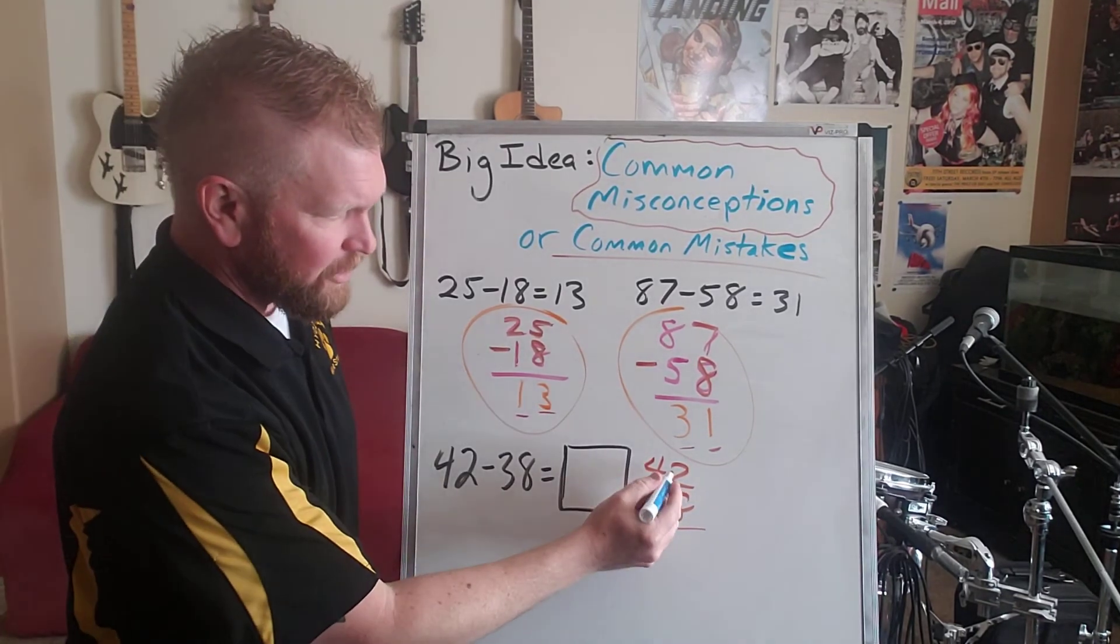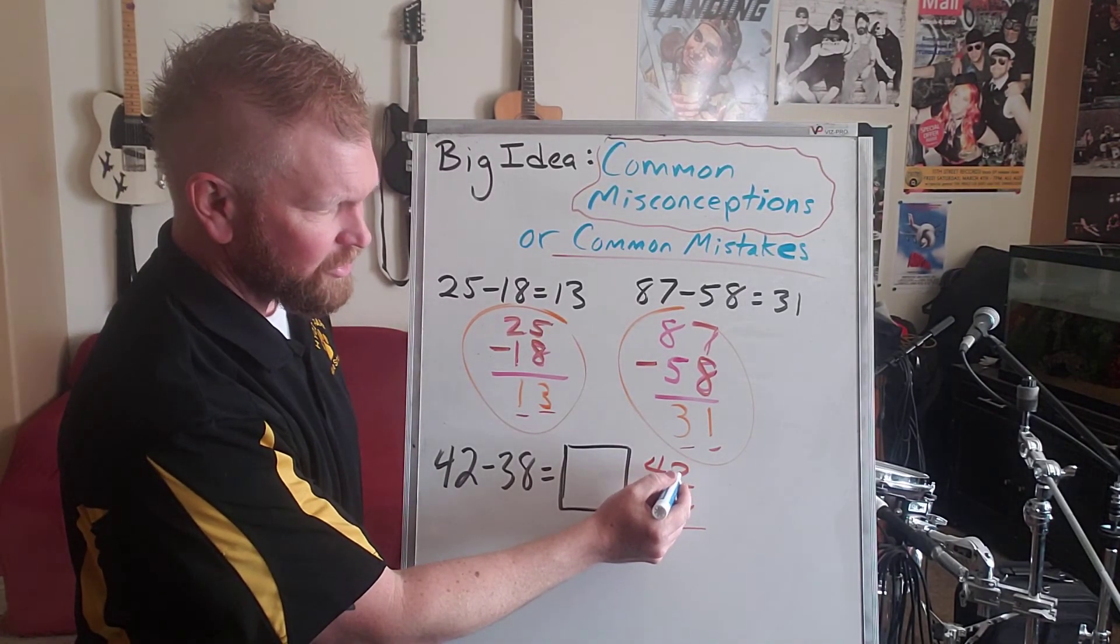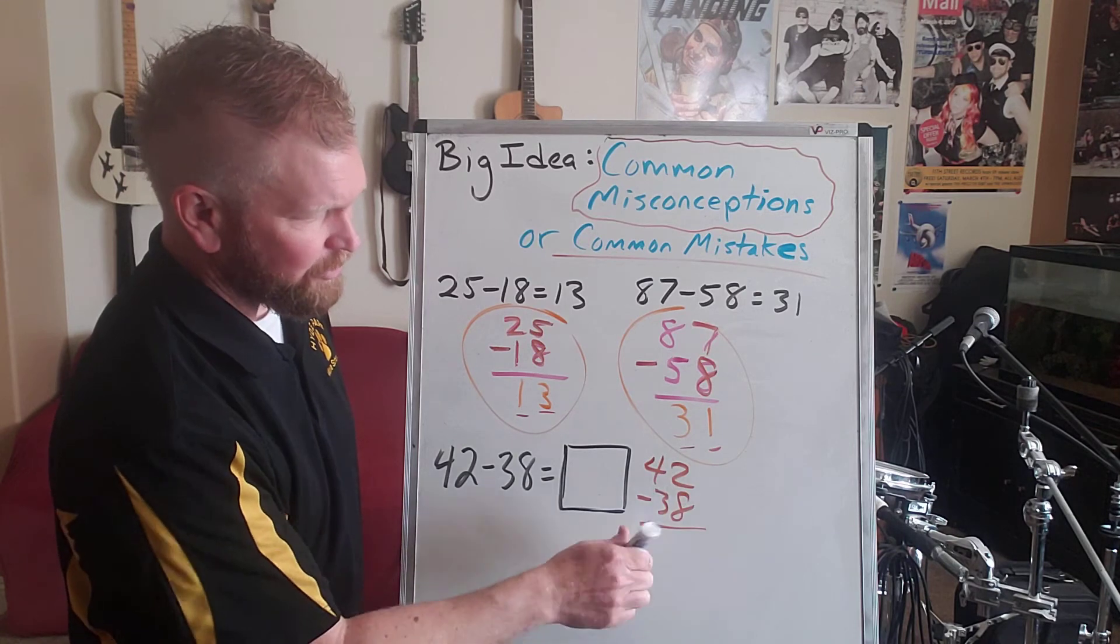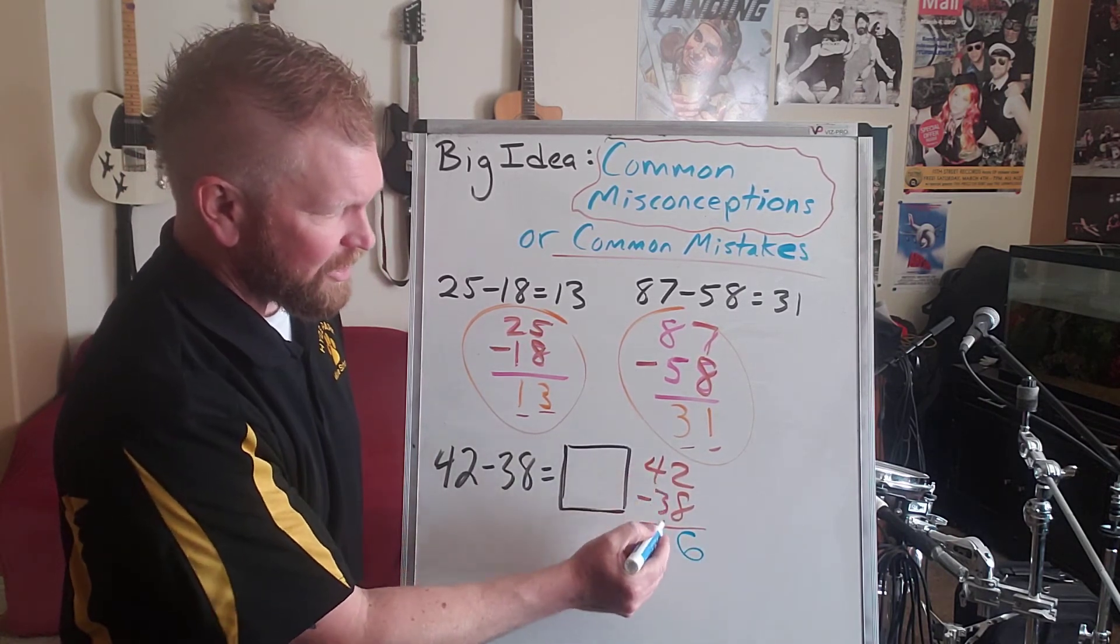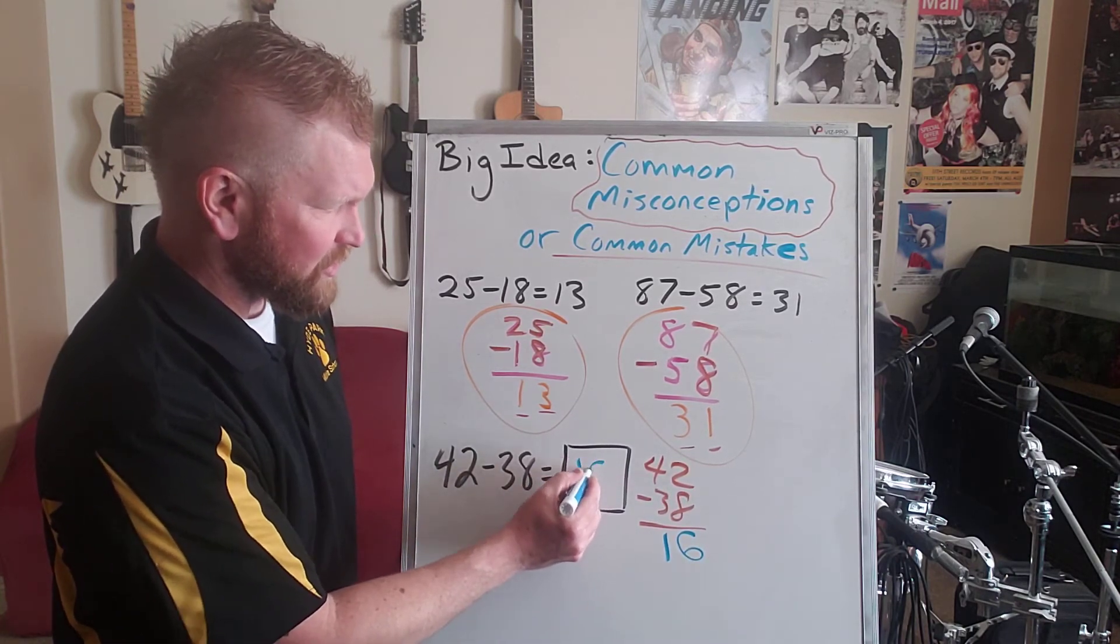Okay, so instead of regrouping to make this larger to take away 8, what they're going to do is simply 8 take away 2. 8 take away 2 is 6. And then 4 take away 3 is 1. This student is going to think this answer is 16.